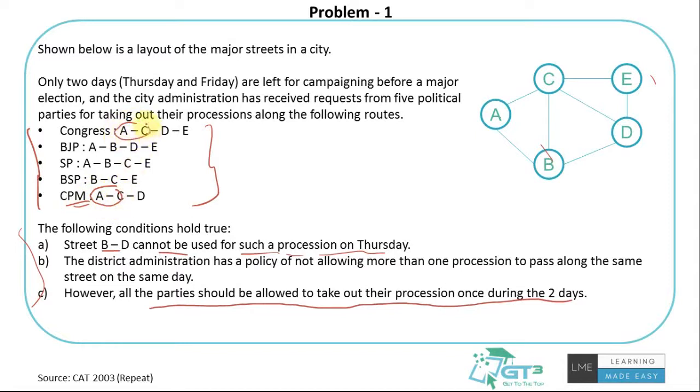Congress also needs Street AC, and these conditions clearly say the administration has a policy of not allowing more than one procession to pass along the same street on the same day. So they're bound to do it on different days. You can indeed solve it. It's an easier question. What we strongly recommend is to pause the video and try to solve this question on your own. Once you've tried, you can continue watching to see how we approached this question.